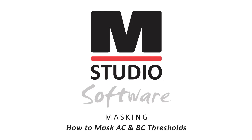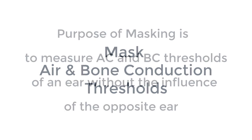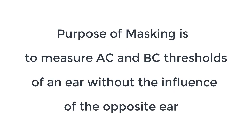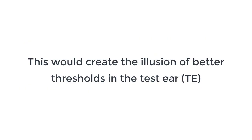In this video we are going to perform the audiometry tests within the new Medrex Studio software. We will review how to mask air and bone conduction thresholds. The purpose of masking is to measure the air conduction and bone conduction thresholds of an ear without the influence of the opposite ear. Crossover of the signal through the skull can cause the non-test ear to hear the tone presented and elicit a response before the test ear actually heard the tone, creating the illusion of better thresholds in the test ear.